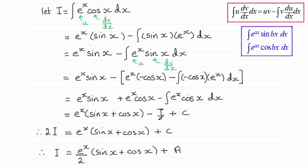So then we add I to both sides; that gives me 2I equals this. And then I divide by 2 and I end up with this term and then c over 2, which I've called another constant A.